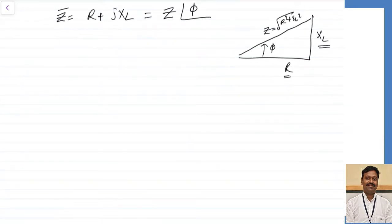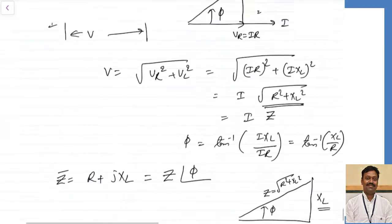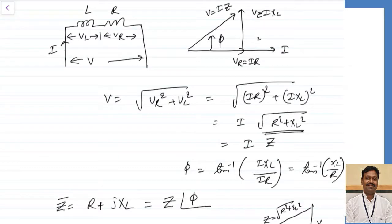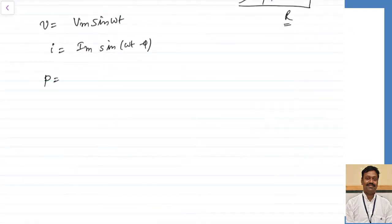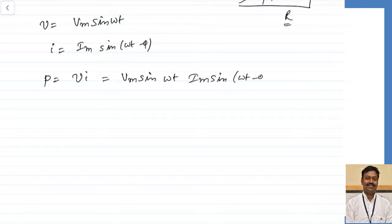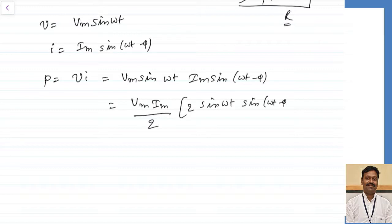Let us calculate the power. We know the instantaneous value of the voltage. If voltage is taken as my reference, I can write v = Vmax · sin(ωt). Since we had taken current as reference earlier, the voltage leads the current by angle φ — so if voltage is reference, the current is lagging the voltage by angle φ, giving i = Imax · sin(ωt − φ). The instantaneous power is instantaneous voltage into instantaneous current: p = Vmax · sin(ωt) × Imax · sin(ωt − φ).